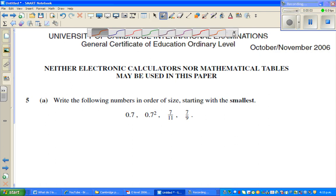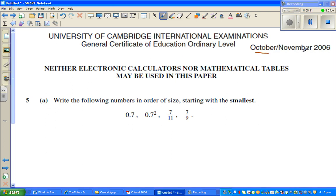Welcome back. In this video again, I'm continuing with Cambridge International Exams. This paper was taken from October 2006. This is question number 5. In the previous two videos, I've solved up to question number 4. Now the question is, write the following number in order of size, starting with the smallest.